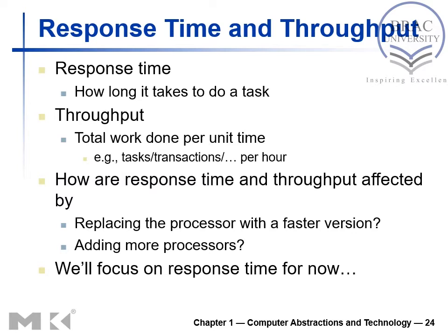How are response time and throughput affected? By replacing a processor with a faster version and adding more processors. If we replace an existing processor with a faster version, response time will decrease — meaning there will be a quicker response from the system — so throughput will also increase. Also, we can add more processors, which means we can add more processing capacity.